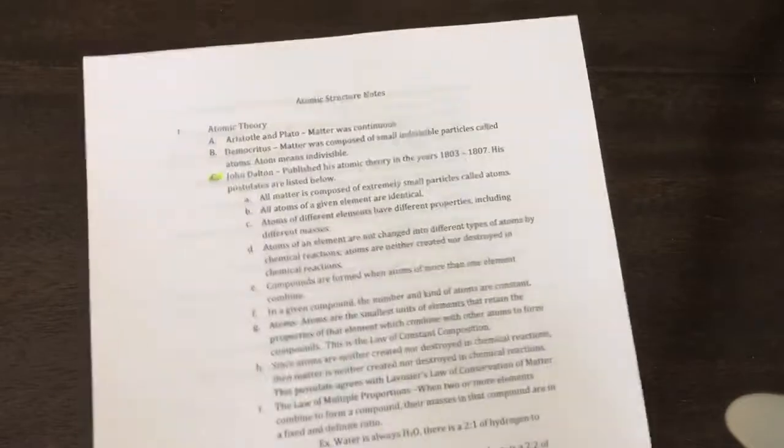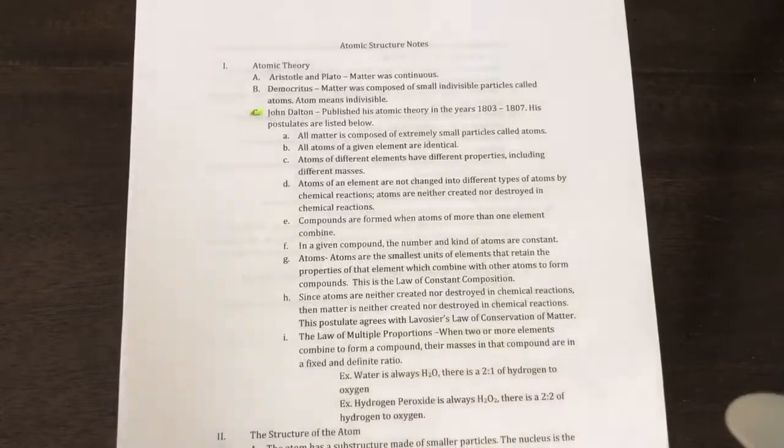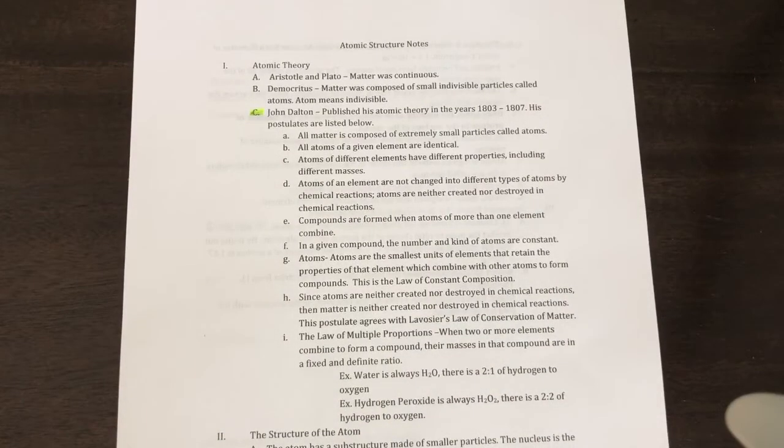John Dalton published the atomic theory between 1803 and 1807. His postulates are listed below. On your test, I'm going to ask you to state five parts of his atomic theory. All matter is composed of extremely small particles called atoms. All atoms of a given element are identical. So all gold atoms are the same as gold atoms. All iron atoms are the same as iron atoms.